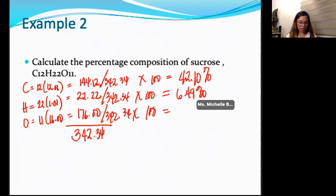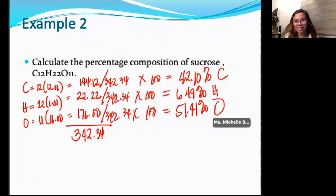So, I have 176 divided by 342.34 times 100. I have here 51.41%. So, 51.41 plus 6.49 plus 42.10. Then I have 100. So, this is 42.10% is carbon, 6.49% is hydrogen, and 51.41% is oxygen. So, this is the percentage composition.